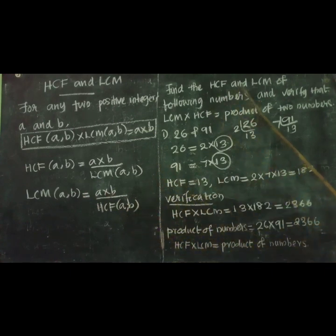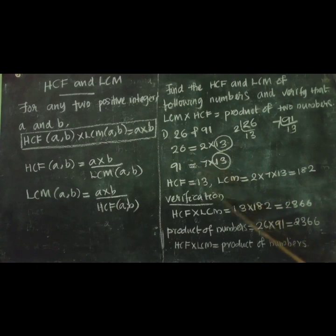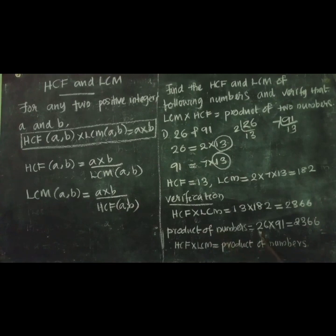Find the HCF and LCM of the following numbers and verify that LCM times HCF equals the product of the two numbers. First question: 26 and 91. Prime factorize: 26 divided by 2 gives 13, which is prime, so 26 equals 2 times 13. 91 divided by 7 gives 13, so 91 equals 7 times 13. The common factor is 13. So HCF equals 13. LCM equals 2 times 7 times 13, which equals 182. Verification: HCF times LCM equals 13 times 182 equals 2366. Product of numbers: 26 times 91 also equals 2366. So HCF times LCM equals the product of the numbers.